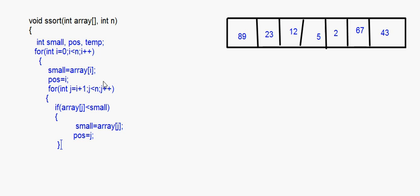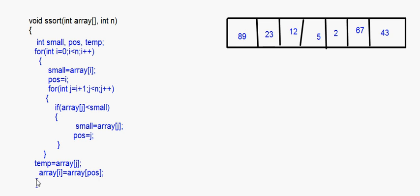Once this is done the inner for loop is closed. When you come out of the inner for loop, you do the swapping: temp is equal to array[i], then array[i] is equal to array[pos], and array[pos] is equal to temp.